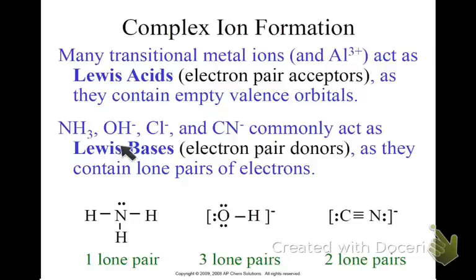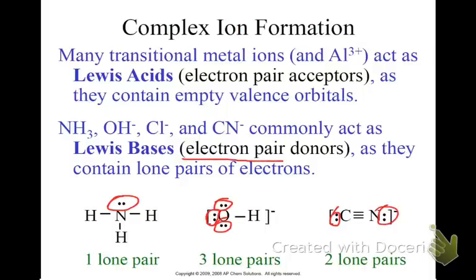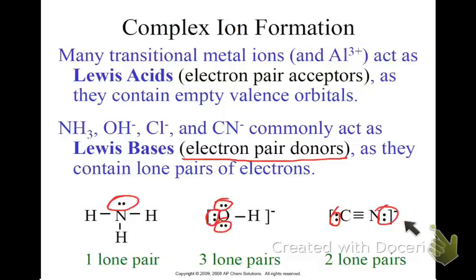Things like ammonia, hydroxide, chloride, and cyanate commonly act as Lewis Bases because they have electron pairs to donate. Ammonia has a lone pair, hydroxide has three lone pairs, and cyanate has one here and one there. With those lone pairs, these molecules can donate electron pairs, which is why these three things act as bases.